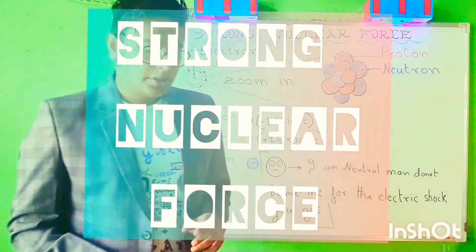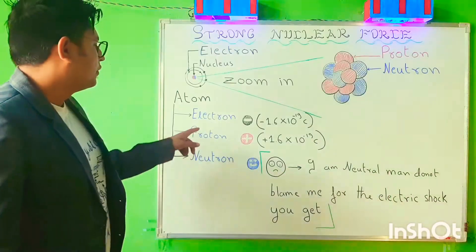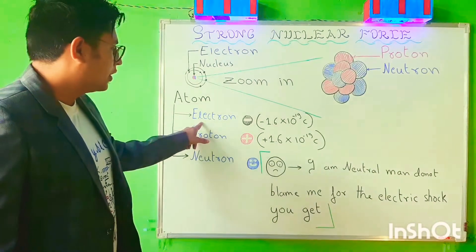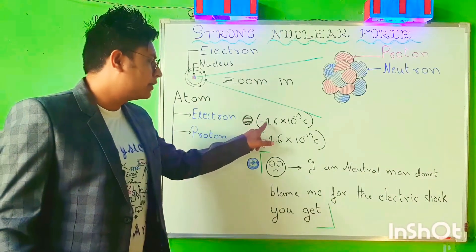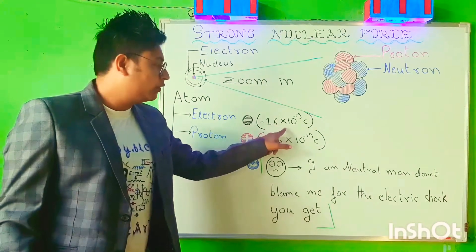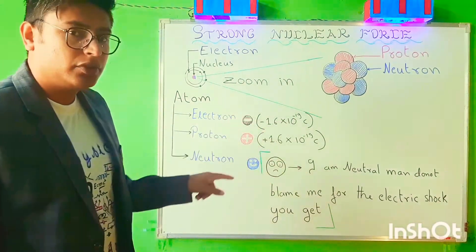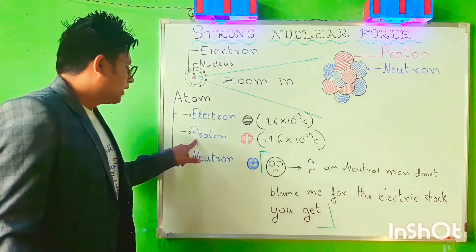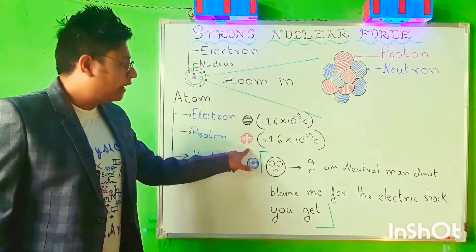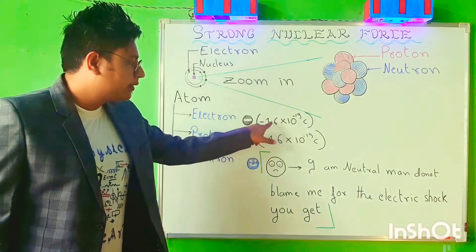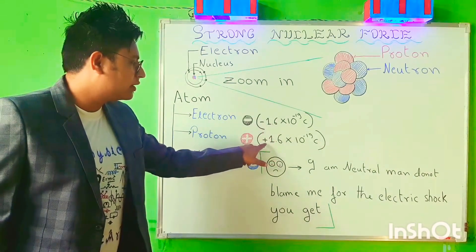As we had discussed earlier, an atom consists of an electron, which is a negatively charged particle having a charge of minus 1.6 into 10 to the power minus 19 coulomb, where coulomb is the unit of charge. And then we have a proton, which is a positive particle having exactly the same magnitude, but in this case the charge is positive.